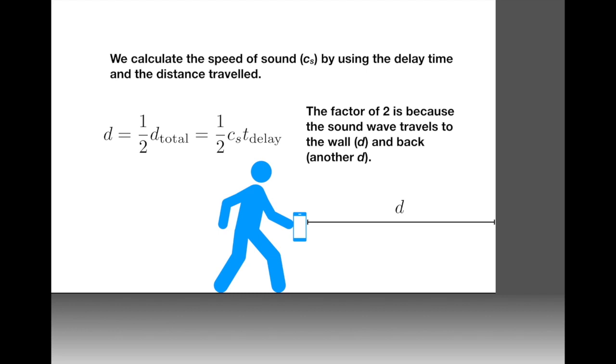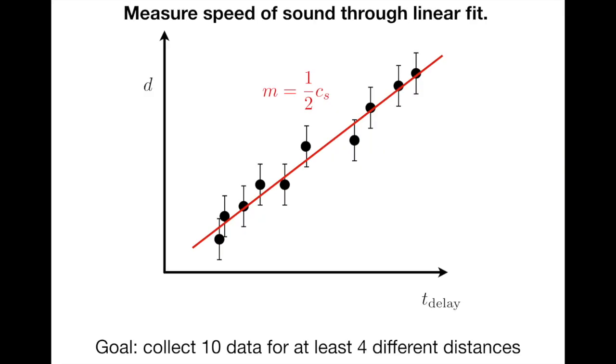We note that the distance to the wall is actually half the total distance that the sound wave travels. It goes to the wall and then comes back again. And that total distance is just the speed of sound times the delay time between when the pulse is transmitted and when it's received. So the distance from the wall ends up being half of the speed of sound times the delay time.